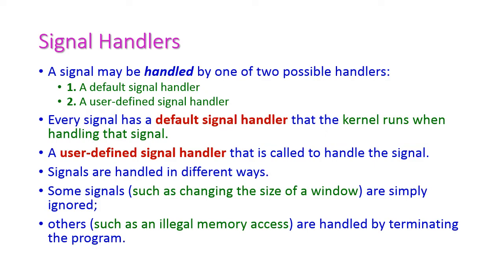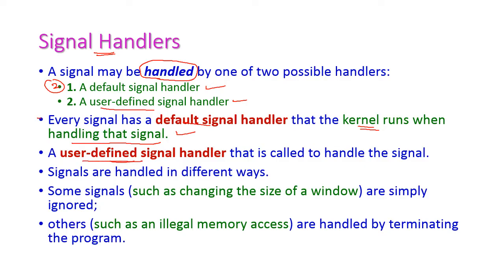Signals are handled by signal handlers, and there are two types: default signal handlers and user-defined signal handlers. Default signal handlers are handled by the kernel to handle all signals — every signal has a default signal handler. User-defined signal handlers are used to call a particular custom signal handler.